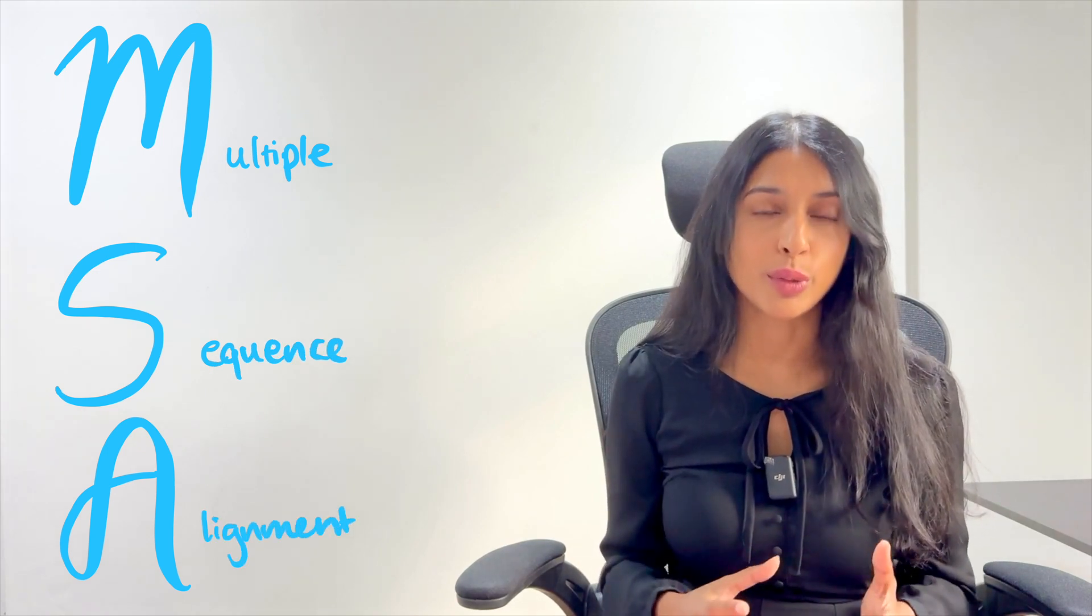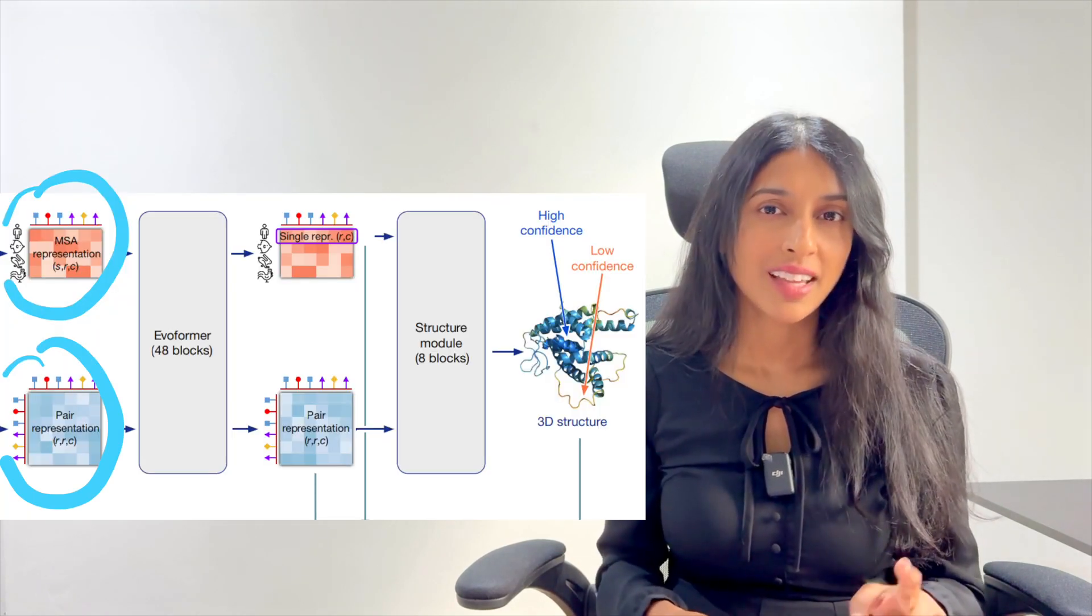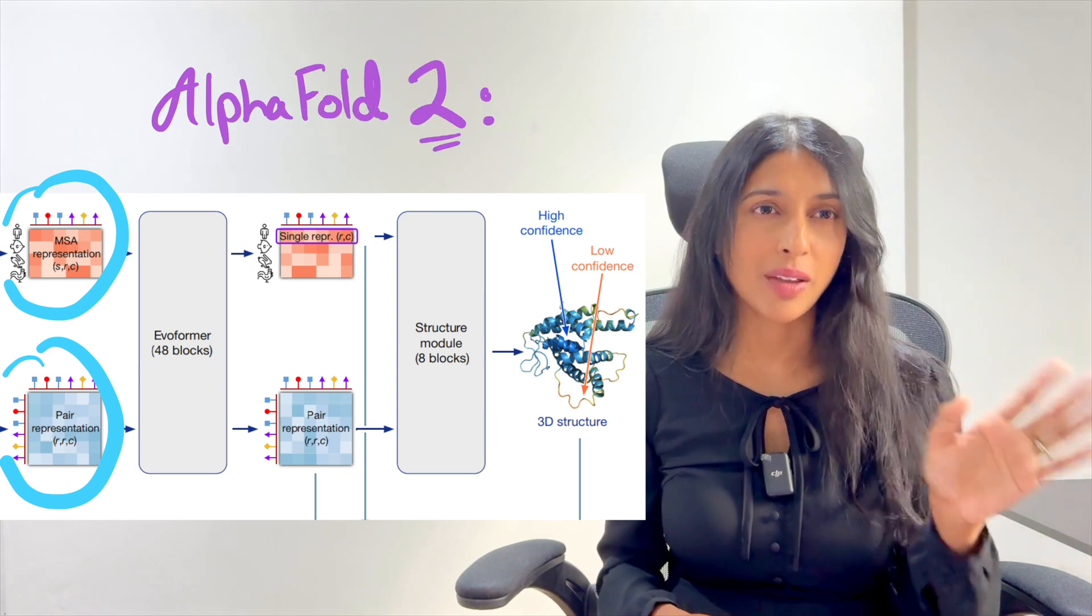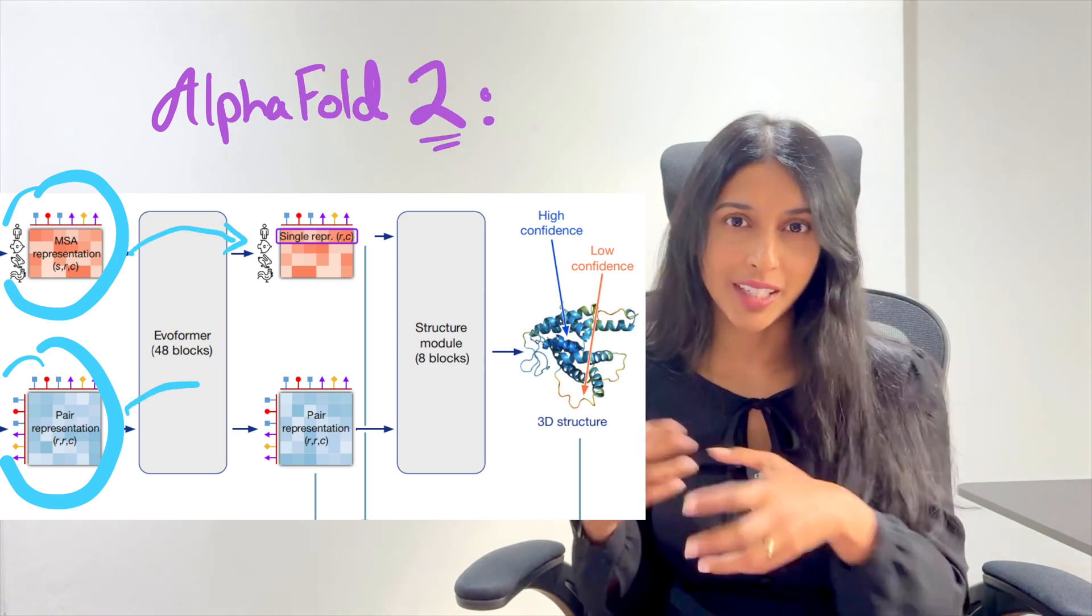There's one other major simplification to the AlphaFold3 algorithm that I want to talk about because I thought it was really surprising and I didn't really expect that something like this would work. They majorly de-emphasize the role of the MSA. As I explained in my last video about AlphaFold2, there are two different objects that contain the information about the protein that goes through the model and gets updated.